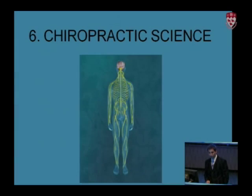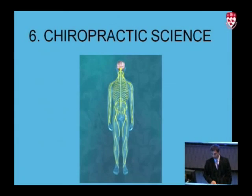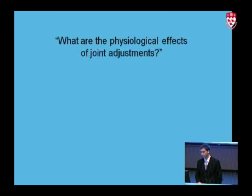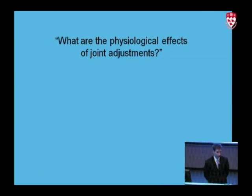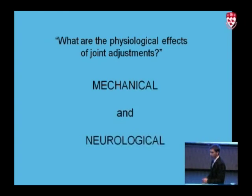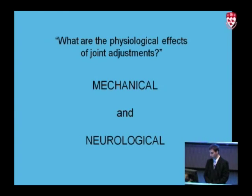The third facet of chiropractic is the chiropractic science. What are the physiological effects of joint adjustments? What actually happens when this high velocity low amplitude impulse is delivered? We can categorize this into two parts: mechanical and neurological.